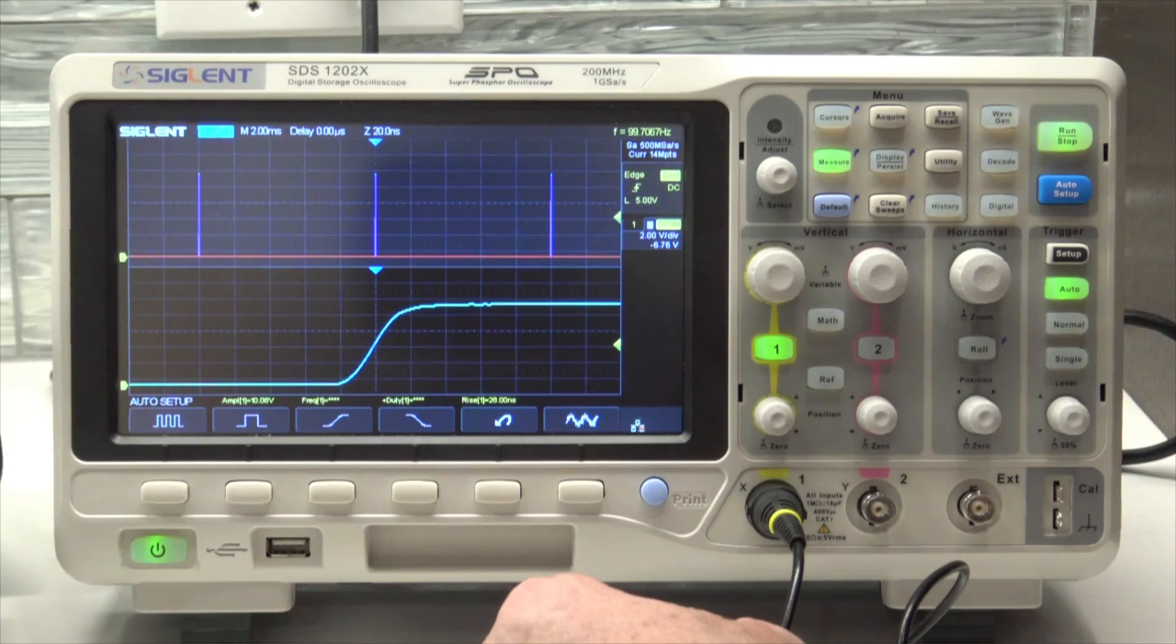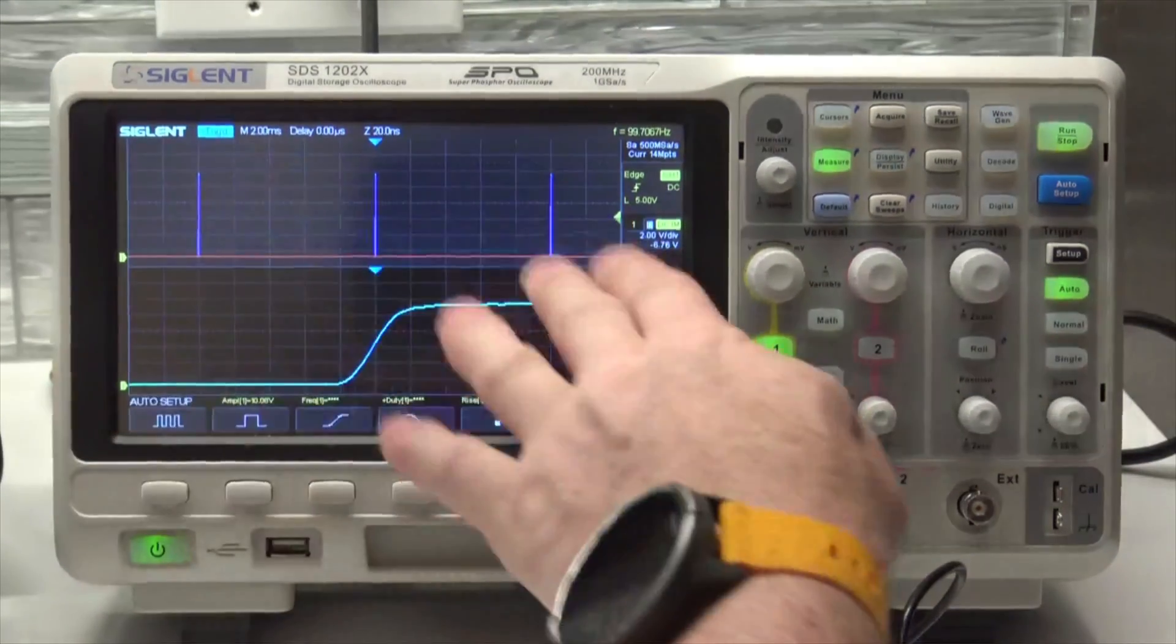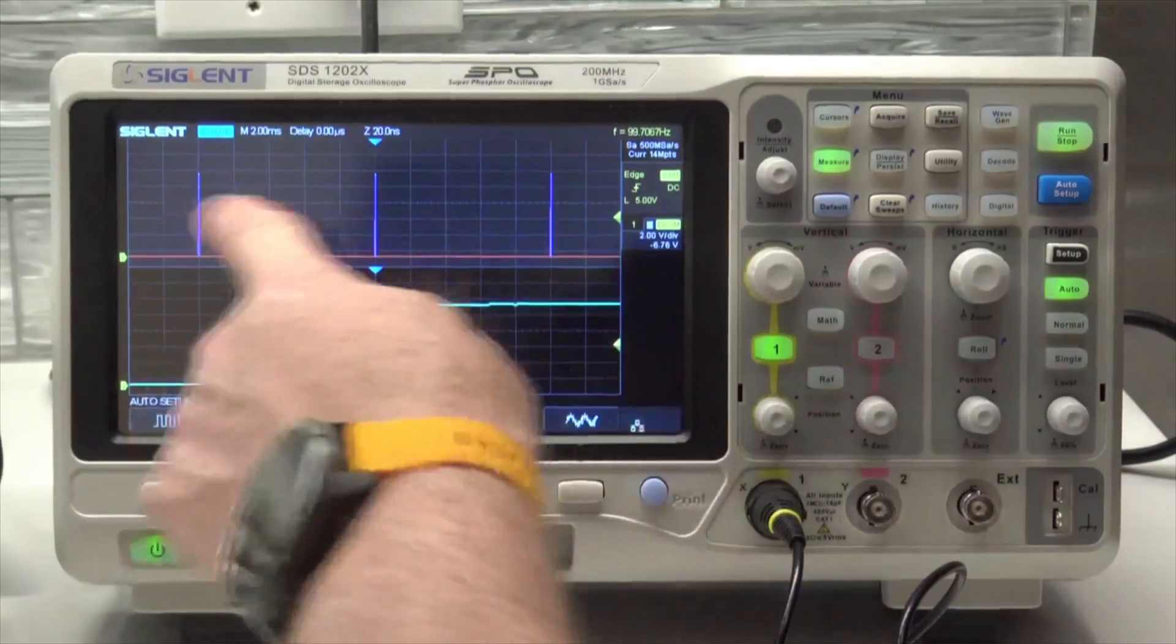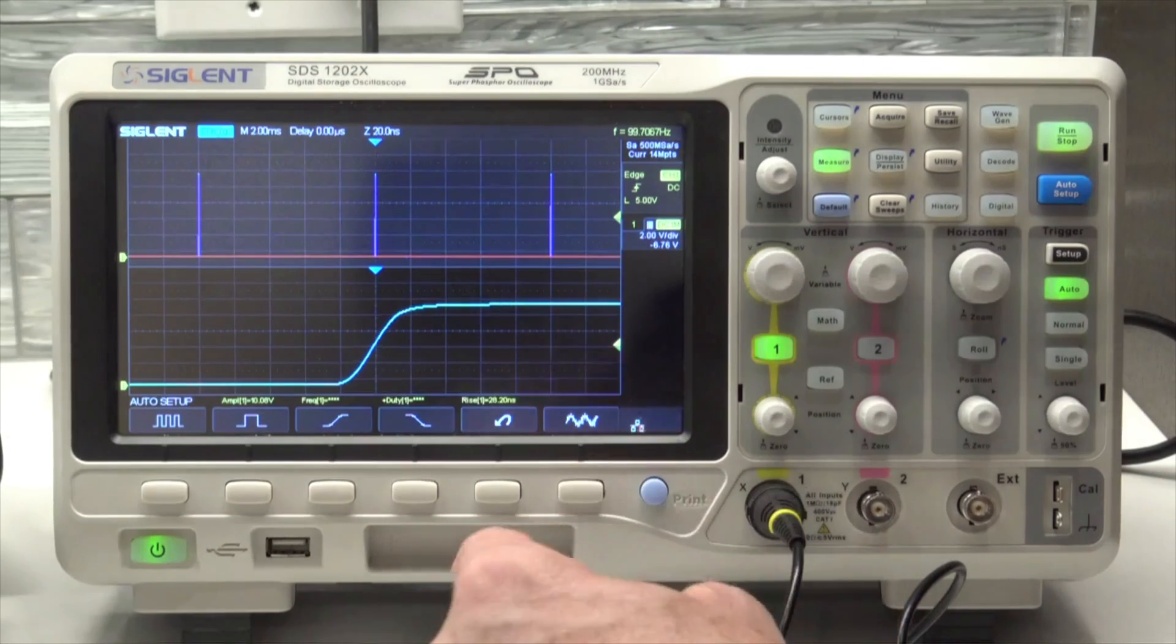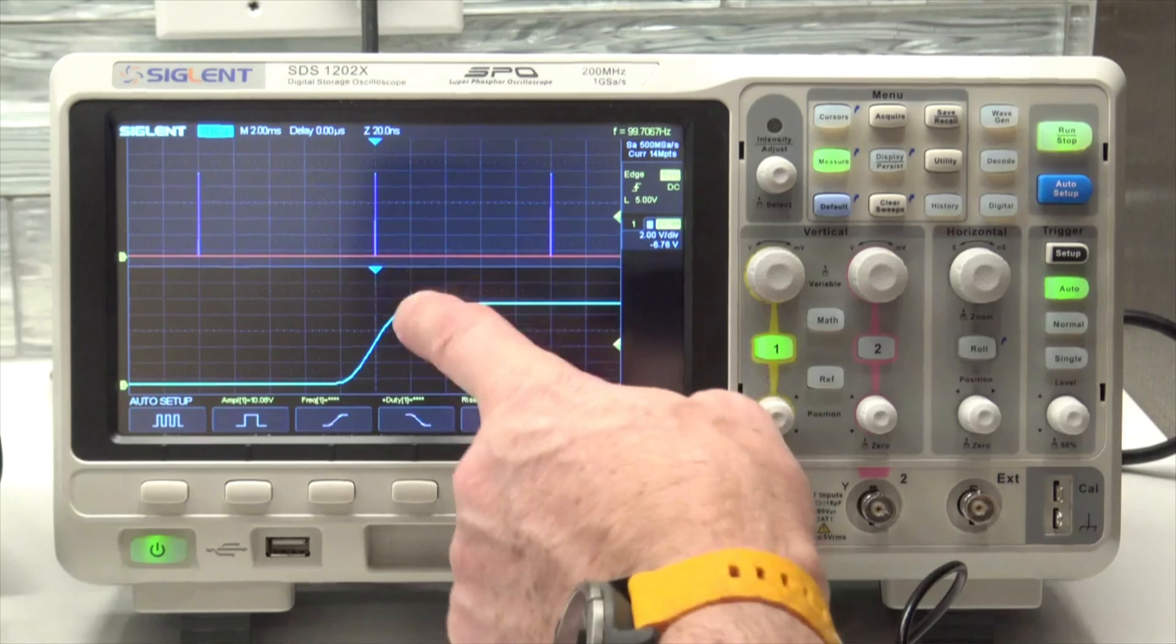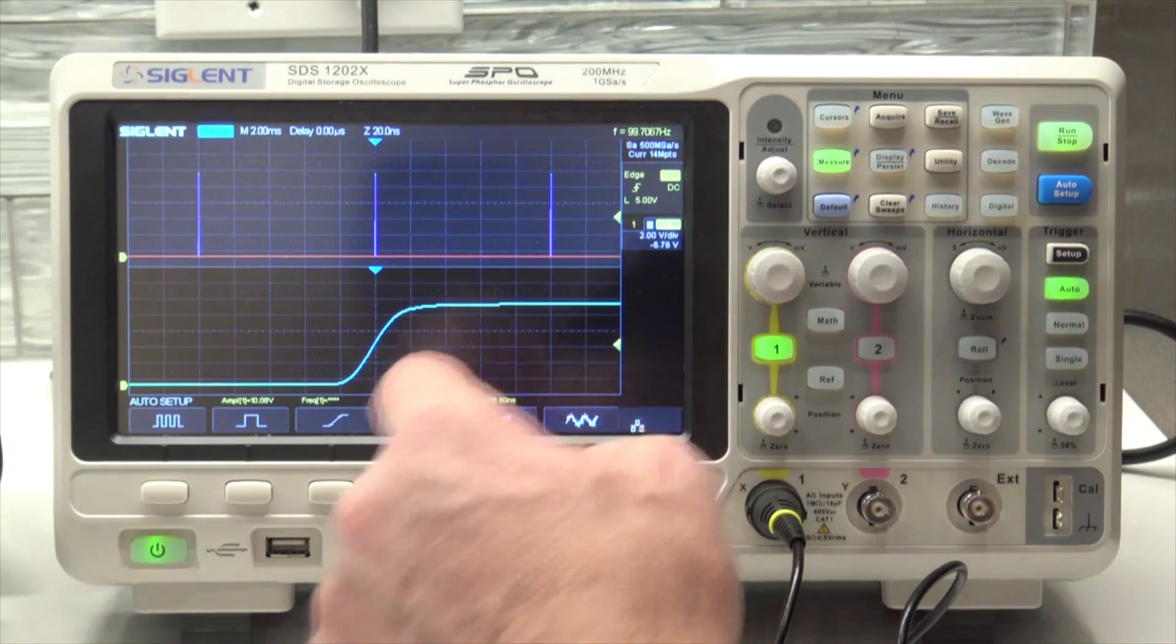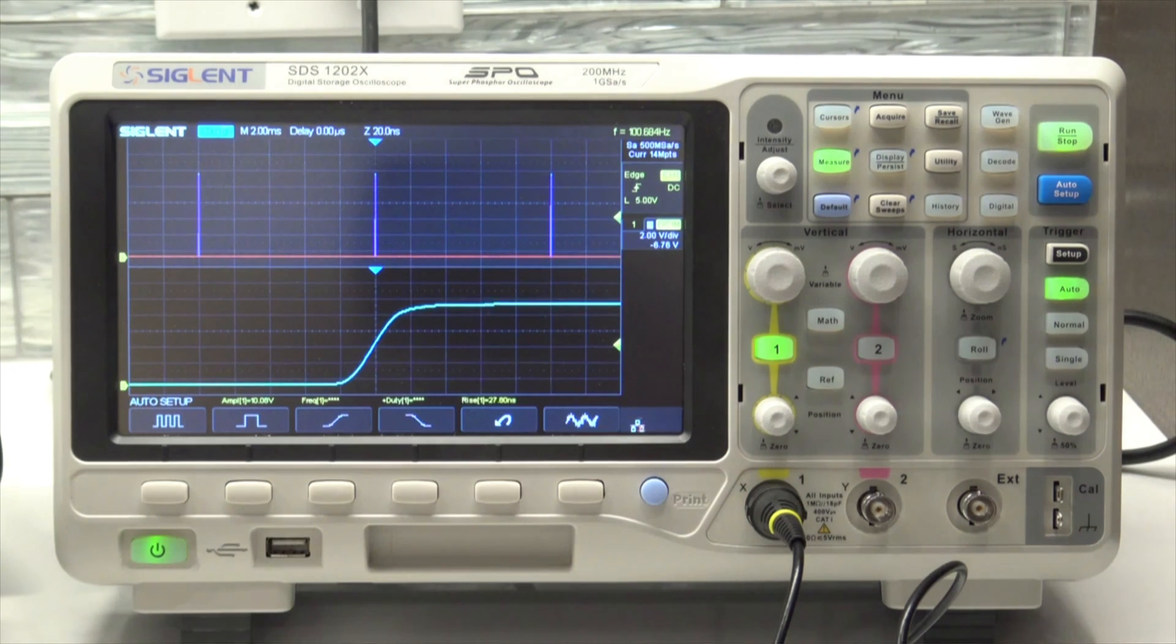So that's an example of deep memory. You want to be able to see what's going on over a wide period of time, but yet you want to have the resolution like you would in an analog scope or the old analog persistent storage scopes. But these digital oscilloscopes are much more powerful these days. There's our first example of deep memory.